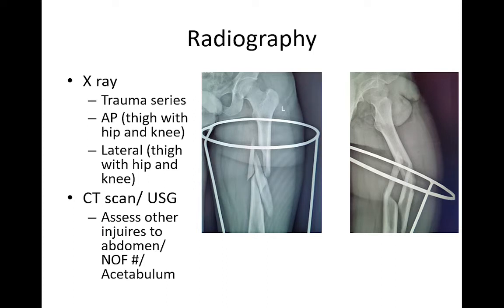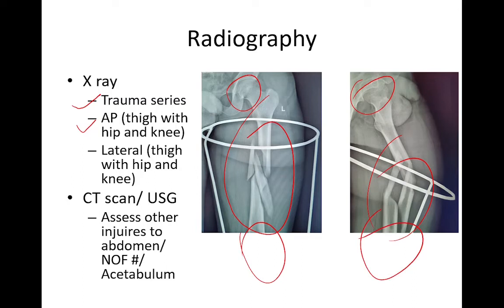For radiological evaluation, a trauma series should be ordered for high-energy injury patients, including x-rays of the cervical spine, pelvis, and chest. An AP view of the thigh with hip and knee showing the complete femur profile is essential. Sometimes two films are needed, but it is imperative that the whole femur be visualized. A CT scan or ultrasound should assess abdominal injuries, and a CT scan of the pelvis can rule out neck of femur or acetabulum fractures.